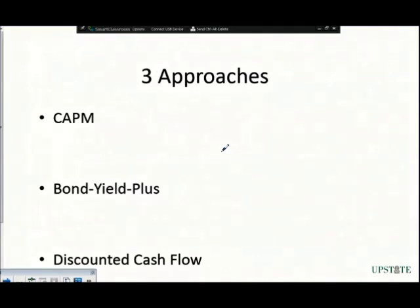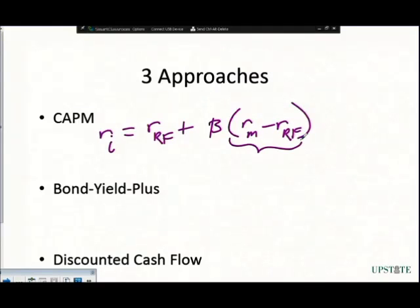We're going to look at what our cost of retained earnings is. We have three measures that we've looked at thus far, one of which is to come up with CAPM. The required return on investment equals our risk-free rate plus our beta multiplied by the return on the market minus the return on the risk-free rate. This part right here is our equity risk premium.